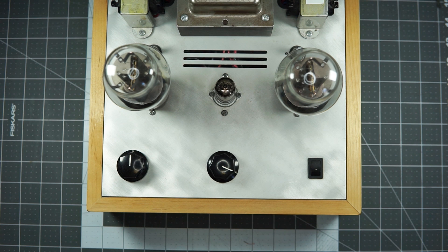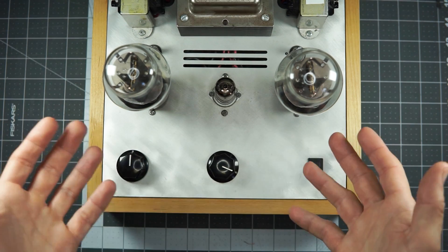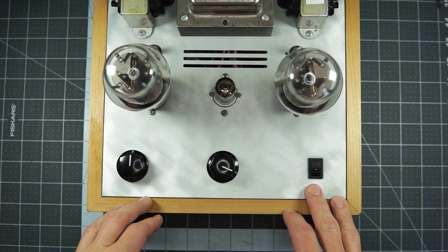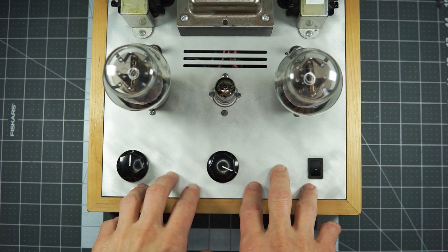So single ended triodes or SET transformer coupled amps, like this guy. This is the Bottlehead Stereomour. Bottlehead's a kit amp kit company out of, I think, Washington State.